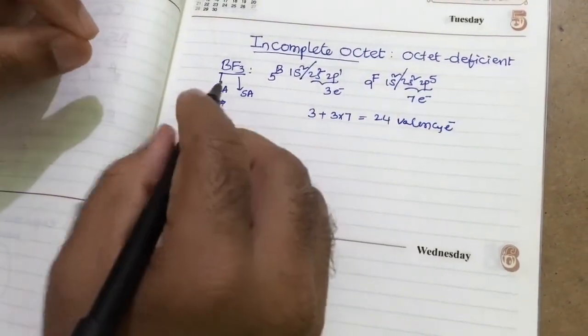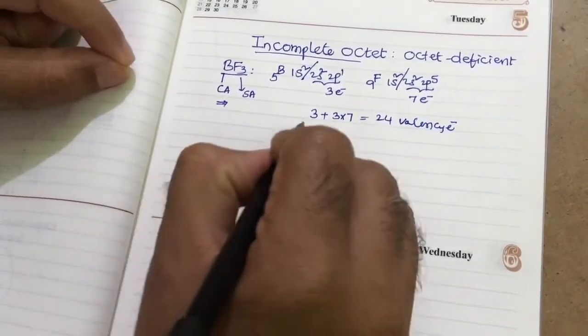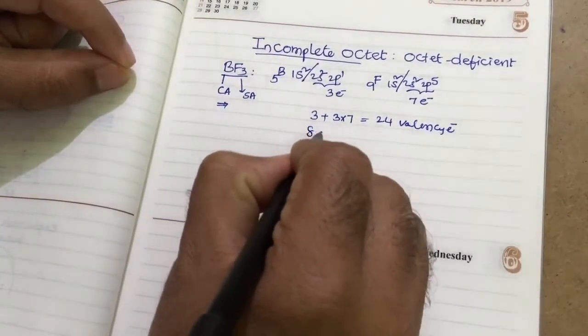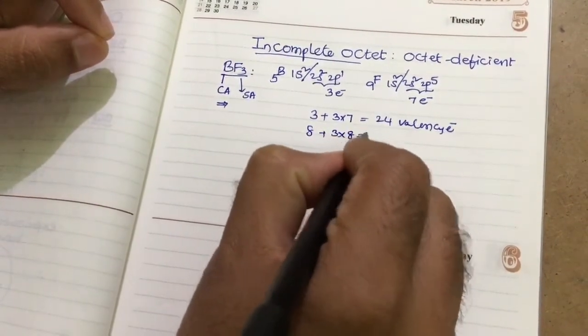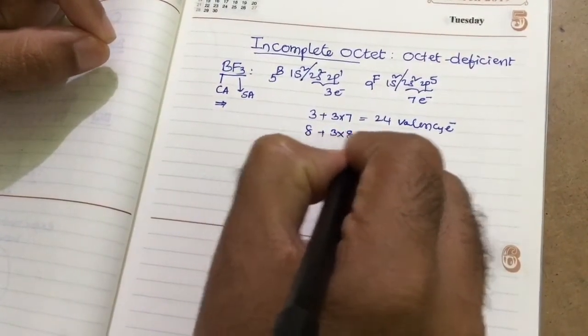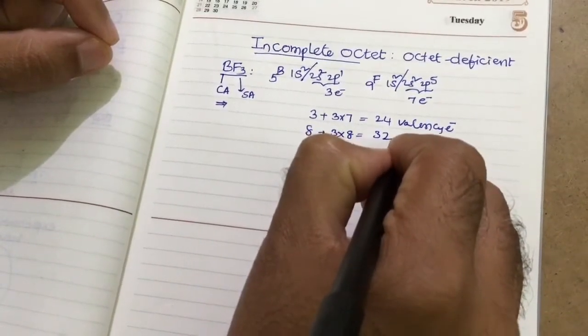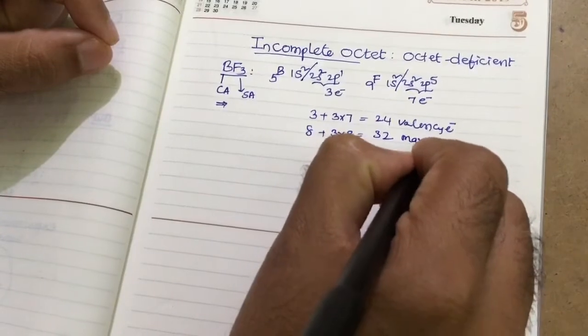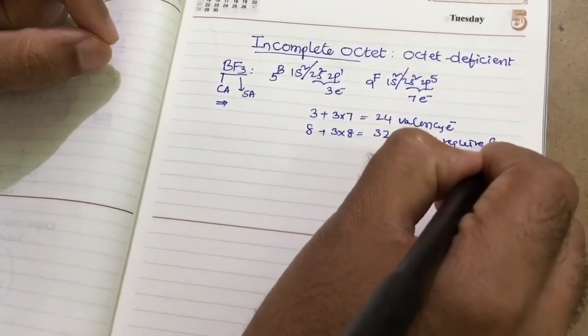But each atom to get octet, 8 electrons are required. Boron requires 8 electrons. Each fluorine requires 8 electrons. Then 3 times 8, 24, 24 plus 8. That is 32 electrons, maximum electrons required for octet.